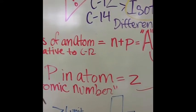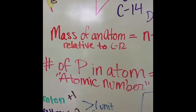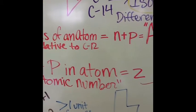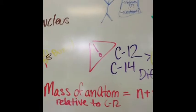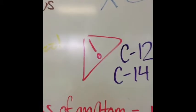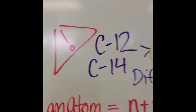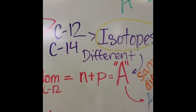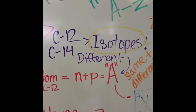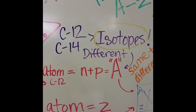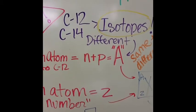The number of protons in an atom is the atomic number, denoted with Z. Careful — not all atoms of the same element have the same mass. Atoms of the same element with different masses are called isotopes. They have different mass because they have the same number of protons, but a different number of neutrons.